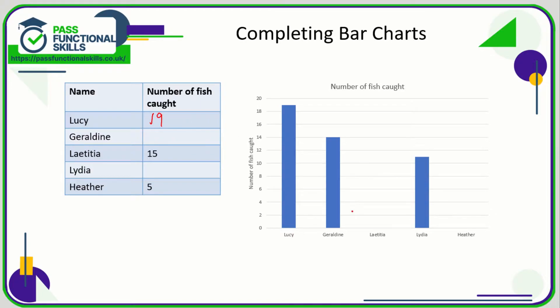Geraldine goes all the way up to 14, and Lydia goes between 10 and 12, so that has to be 11. Done. Now we just need to fill in the bars for Leticia and Heather.